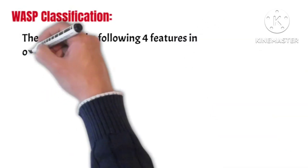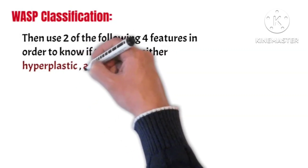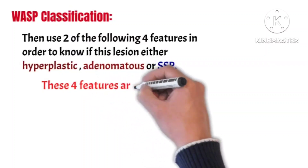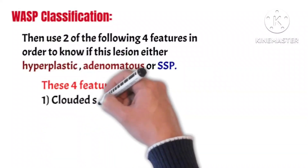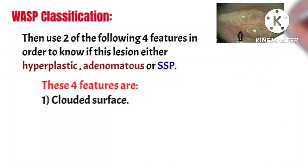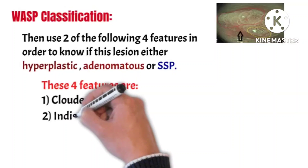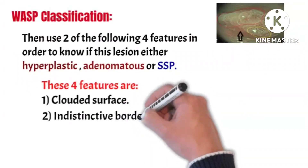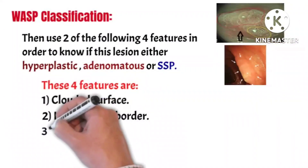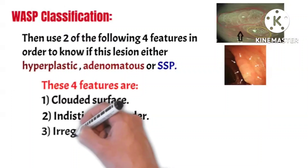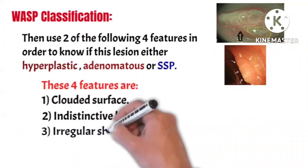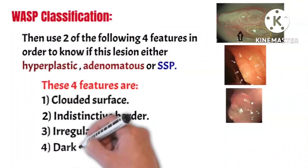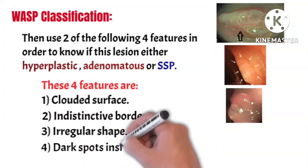Then we use two of the following four features to determine if the lesion is hyperplastic, adenomatous, or a serrated polyp. The first feature is a clouded surface, as shown in the first image. The second is an indistinct connective border, as shown in the second image. The third feature is an irregular shape, as shown in the third image. The fourth feature is dark spots inside the crypts, as shown in the last image.